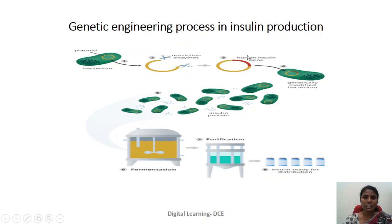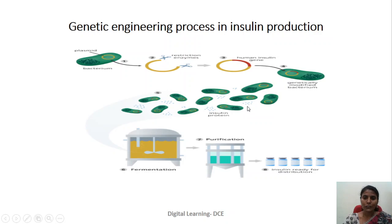After insertion of the gene, this plasmid is known as recombinant DNA. This recombinant DNA is introduced into a new bacterial cell, making it a transformed bacterium. Since the bacterium contains the gene coding for insulin, when it multiplies it also produces insulin. For large-scale production, this transformed bacterial cell is inoculated into a large fermentation vessel where the bacteria multiply in large numbers and release insulin into the media. The insulin is then purified through various steps and packaged for commercial applications.